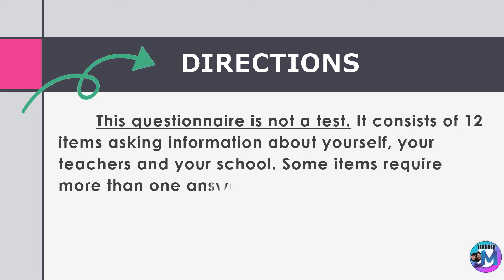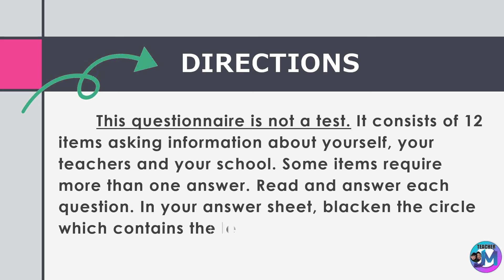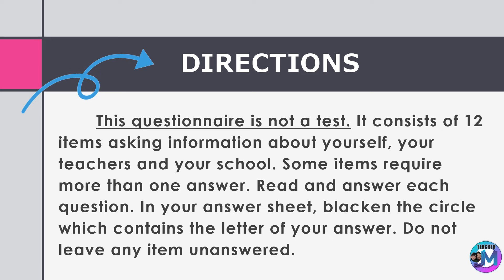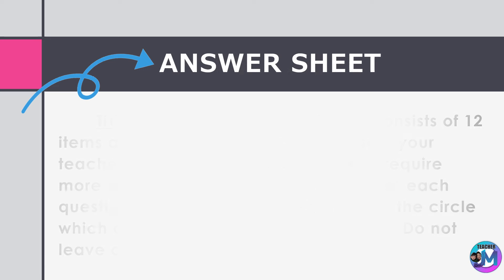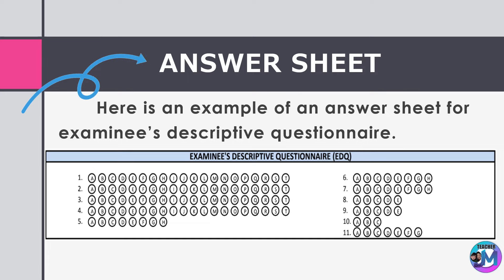of 12 items asking information about yourself, your teachers, and your school. Some items require more than one answer. Read and answer each question in your answer sheet. Blacken the circle which contains the letter of your answer. Do not leave any item unanswered. Below is an example of an answer sheet for the Examinees Descriptive Questionnaire.